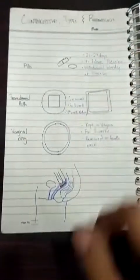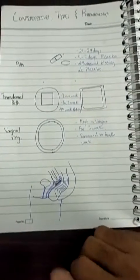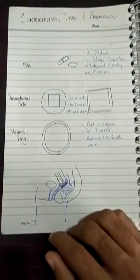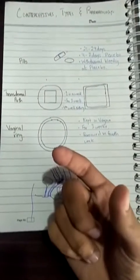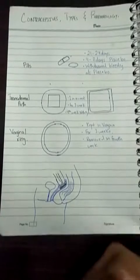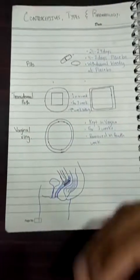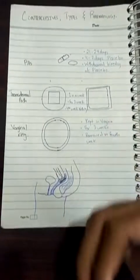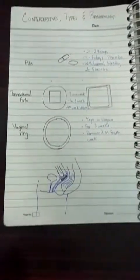The third type is the vaginal ring. There are many types of contraceptives, but last among these three is the vaginal ring, which is a ring-type structure placed inside the vagina by the woman herself. She does not need a professional but does need guidance as to where to place it.